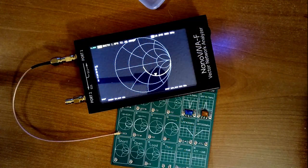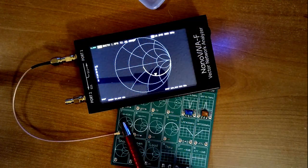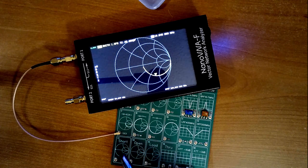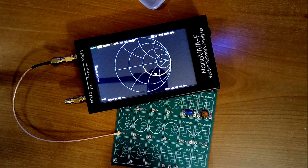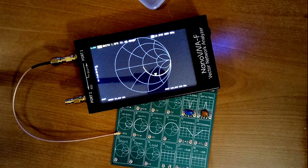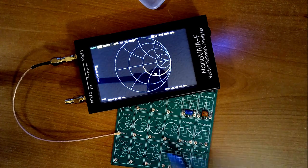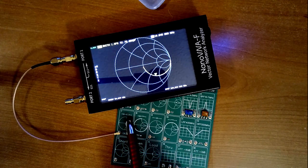Now, interestingly, test structure seven on the demo board has a curve that looks a lot like what we saw on the oscilloscope. And what is that? Well, it's a capacitance in series with a resistance.